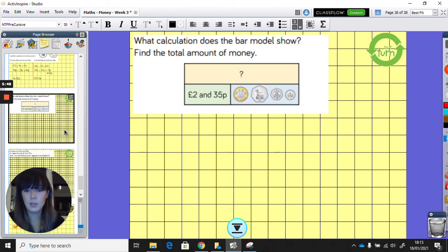Right, now it's our turn. What calculation does the bar model show? So you need to find the total amount of money. So we've got amount here, and we've got an amount here, and I want to know what the total amount is. Pause the video here and have a go. So, you should have paused the video. And I'm going to show you how we're going to work this out.